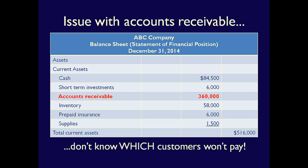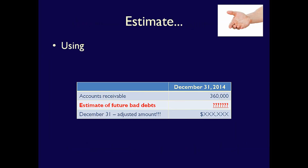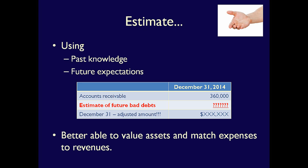How do companies handle this uncertainty? Well, they guess — an educated guess, one that's based on the facts from the past and expectations about the future. Companies look at their accounts receivable history, at the industry overall, and finally at the economy in order to estimate the amount of accounts receivable that they think won't be collected in the upcoming 12 months. Using this estimate of uncollectable accounts, they are in a better position to value accounts receivable at year end and to match the expenses to the revenue it helped to generate in that year.